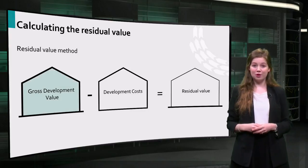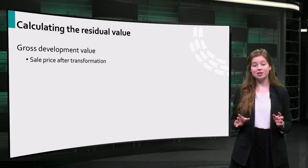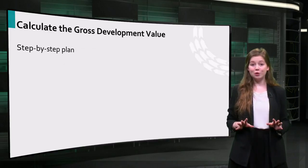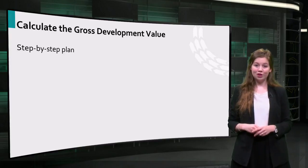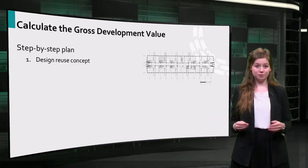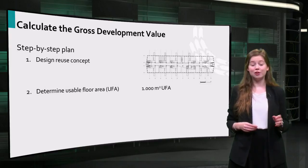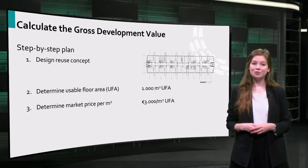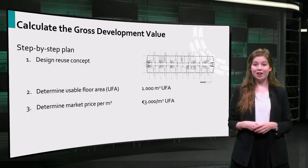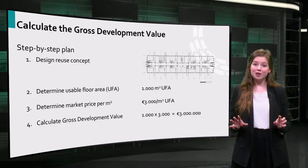In order to determine the residual value, we will first calculate the gross development value. The gross development value is the sale price of the conversion — the price that a new owner is willing to pay when a developer has transformed the building into a specific function. With the following step-by-step plan you can calculate the gross development value: first, design a reuse concept by drawing rough floor plans for a specific function. Then determine the usable floor area — the floor area that can be sold or let out after the conversion. After that, do some market research and look at the sale price per square meter of buildings with a similar function.